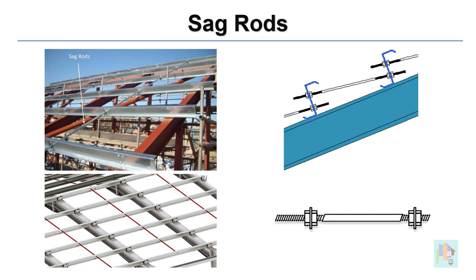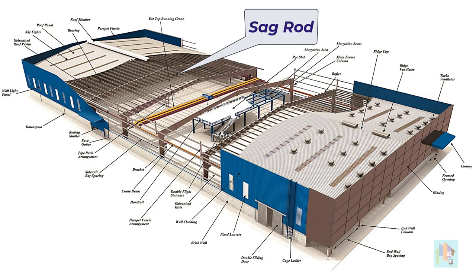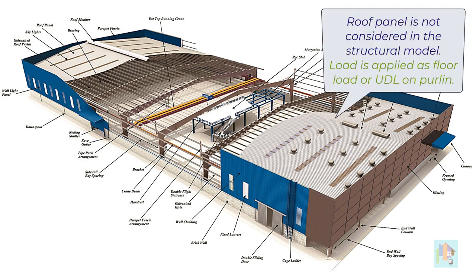Modeling the sag rod will increase the modeling time with small change in the results. If a heavy section is used like a tube section, then it is better to consider this in the model. We also don't model any roof or wall panel as discussed earlier. Generating a finite element mesh is a time-consuming job, so it is better to ignore the stiffness to save modeling and analysis time and apply the loads directly as a floor load.